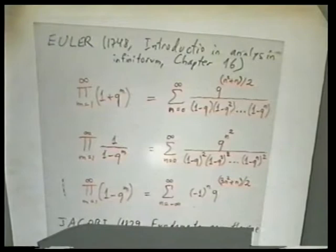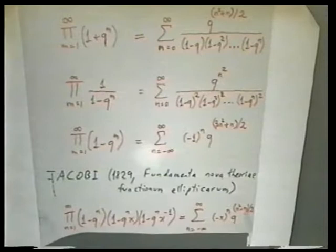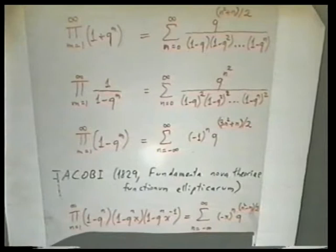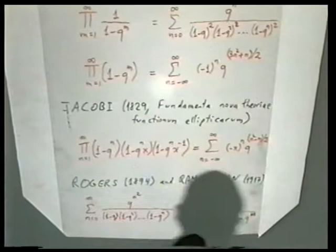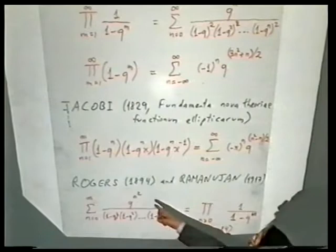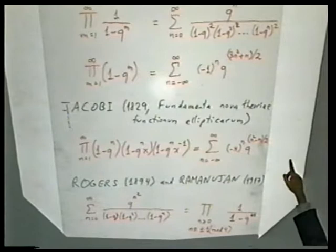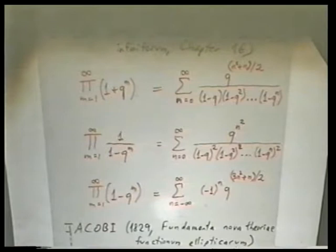Two other identities: one is the Jacobi triple product from his book on elliptic functions, which says that a product of something has an expansion in q to the n squared with various modifications. A yet much more exciting identity is the Rogers-Ramanujan identity, discovered independently but 25 years apart by Rogers and Ramanujan. The sum involves q to the n squared over the product 1 minus q through 1 minus q to the n, and the product side has the very bizarre feature of a five: n congruent to 1 or 4 mod 5.